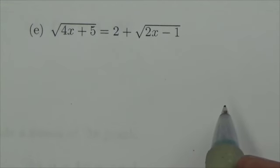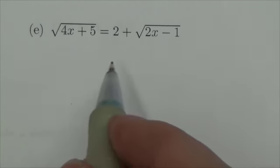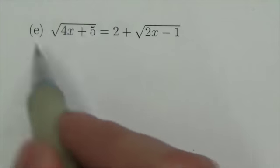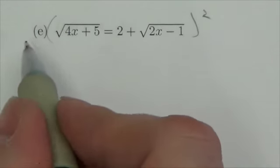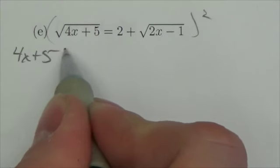I have to solve this equation and as with the previous question, I'm okay with what they've got isolated here already, so we're just gonna square that. Okay, that is gonna leave me with, on the left hand side, 4x plus 5.